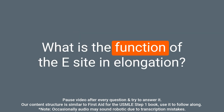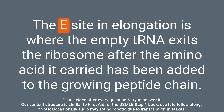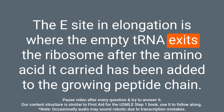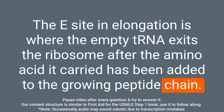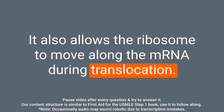Question: What is the function of the E site in elongation? Answer: The E site in elongation is where the empty tRNA exits the ribosome after the amino acid it carried has been added to the growing peptide chain. It also allows the ribosome to move along the mRNA during translocation.